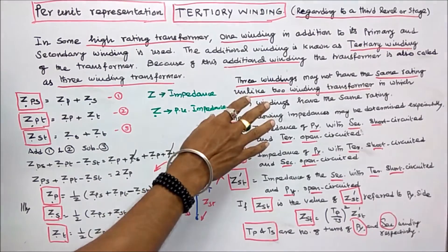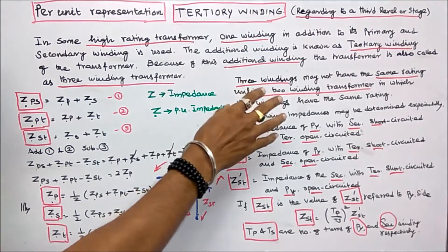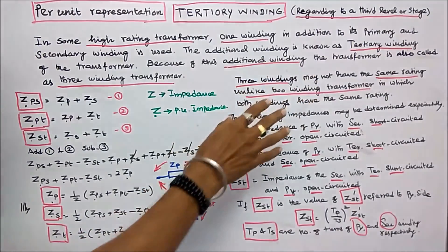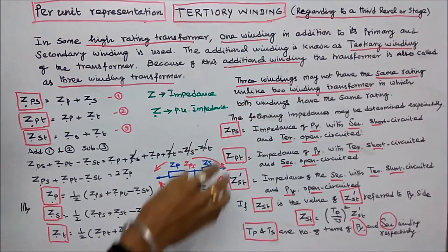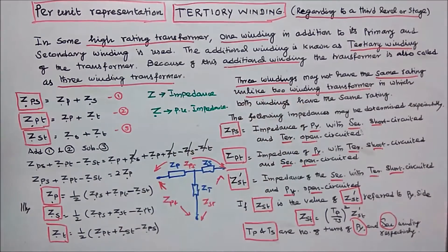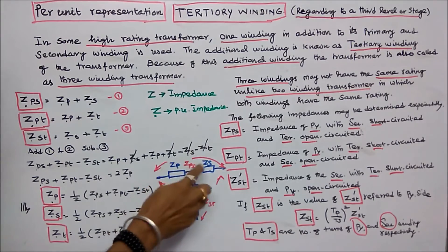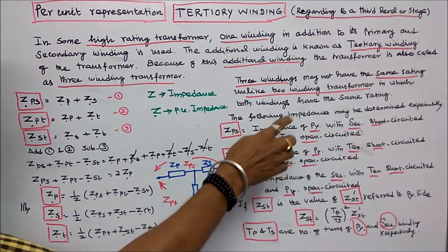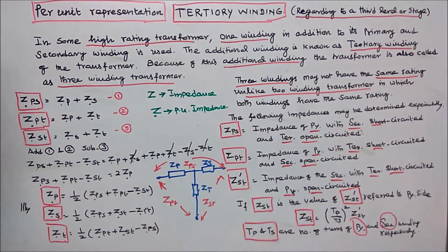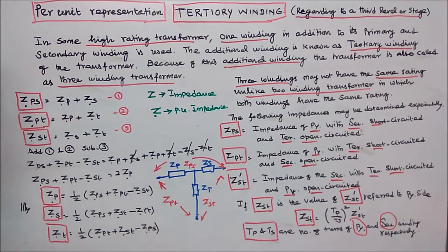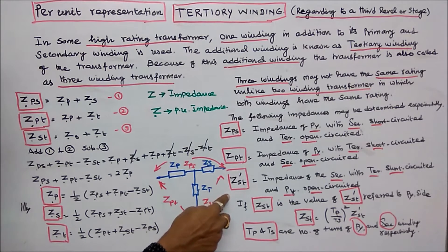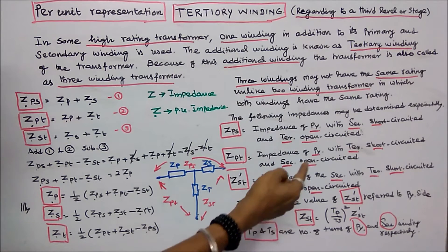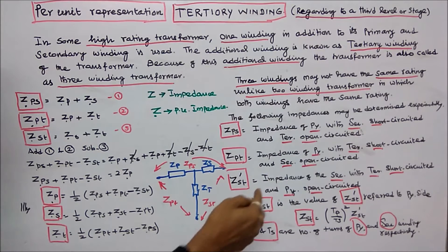Three windings may not have the same rating, unlike a two winding transformer in which both windings have the same rating. The following impedances may be determined experimentally: Zps is equal to impedance of primary with secondary short circuit and tertiary open circuit. Zpt is the impedance of primary with tertiary short circuit and secondary open circuit. Zst dash is equal to impedance of secondary with tertiary short circuit and primary open circuit.